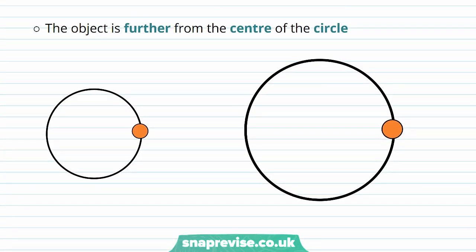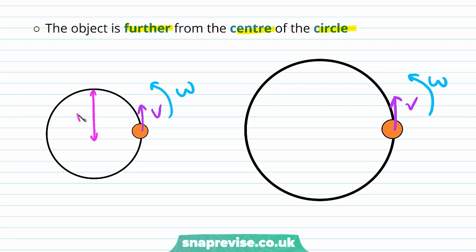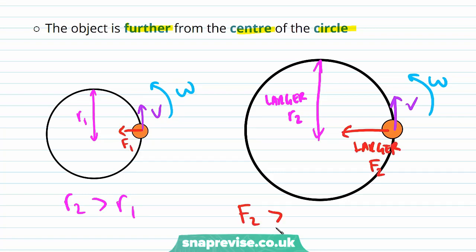We can also increase the centripetal force if the object is further from the centre of the circle. So again, these two objects are going to have the same velocity and the same angular velocity, but they're going to be travelling in different circles — one with radius R1 and one with the greater radius R2. And this means that F2 is going to be greater than F1.